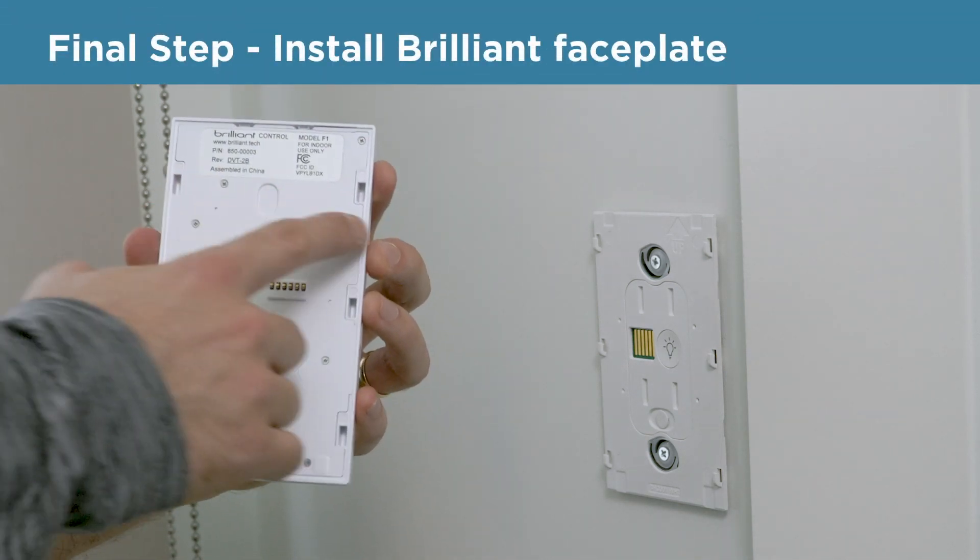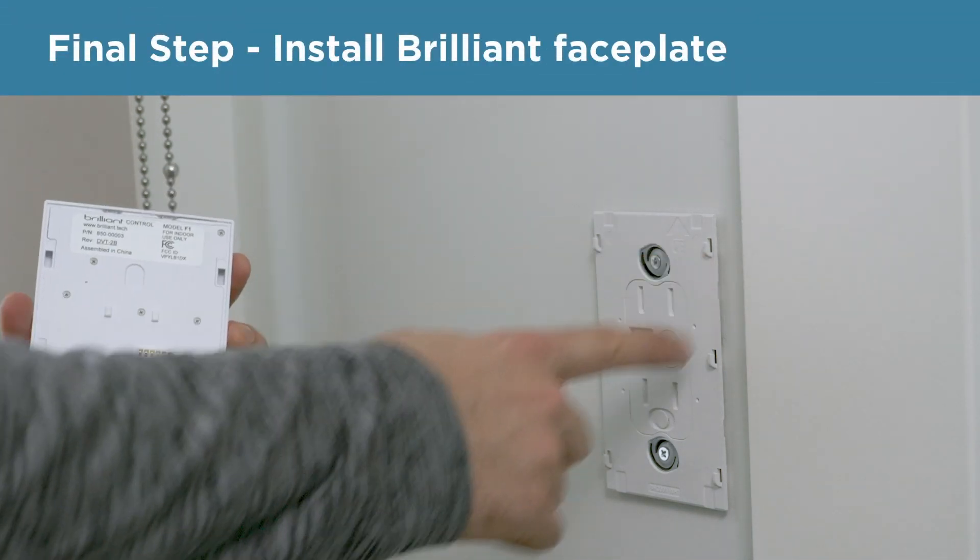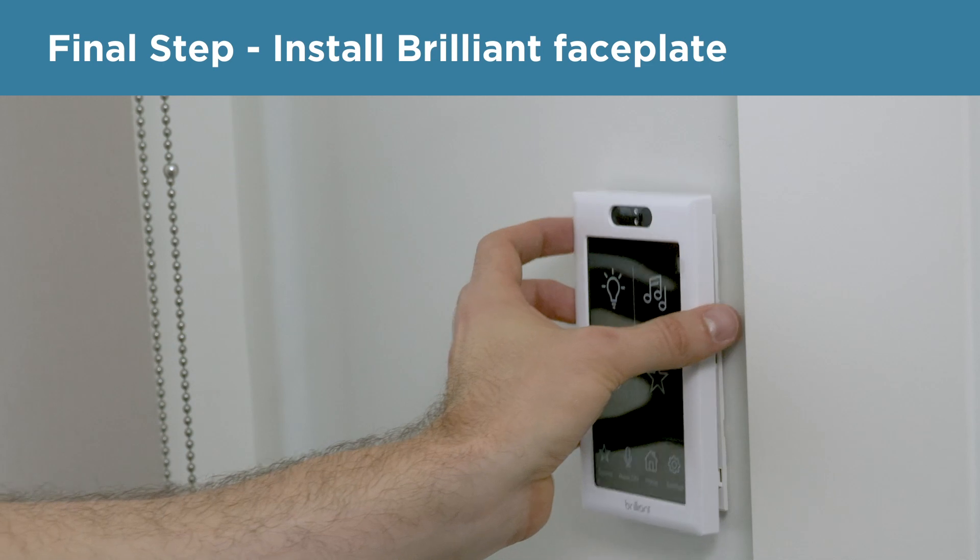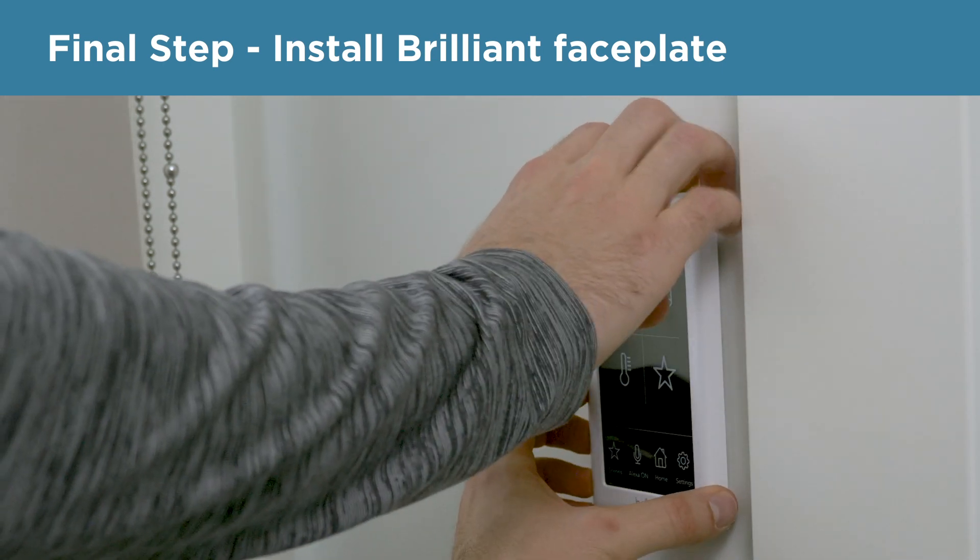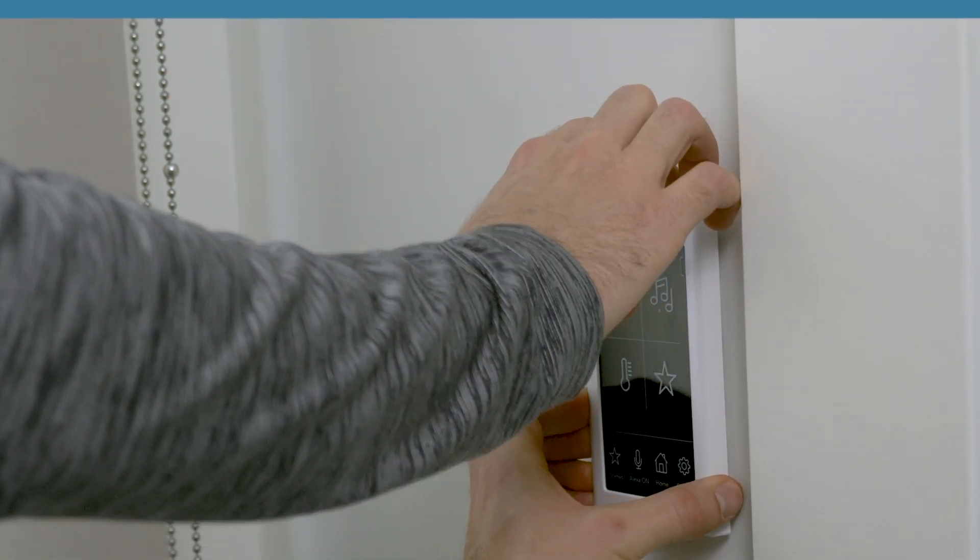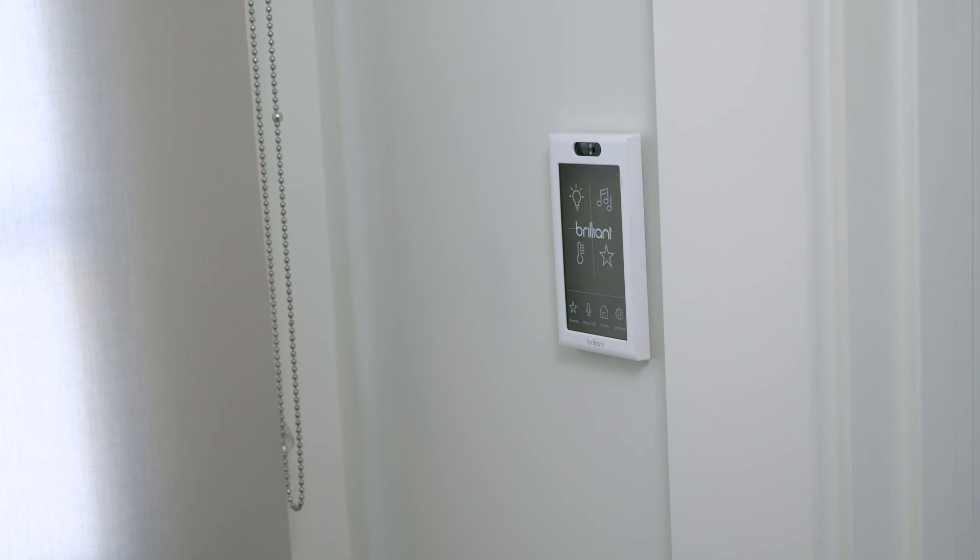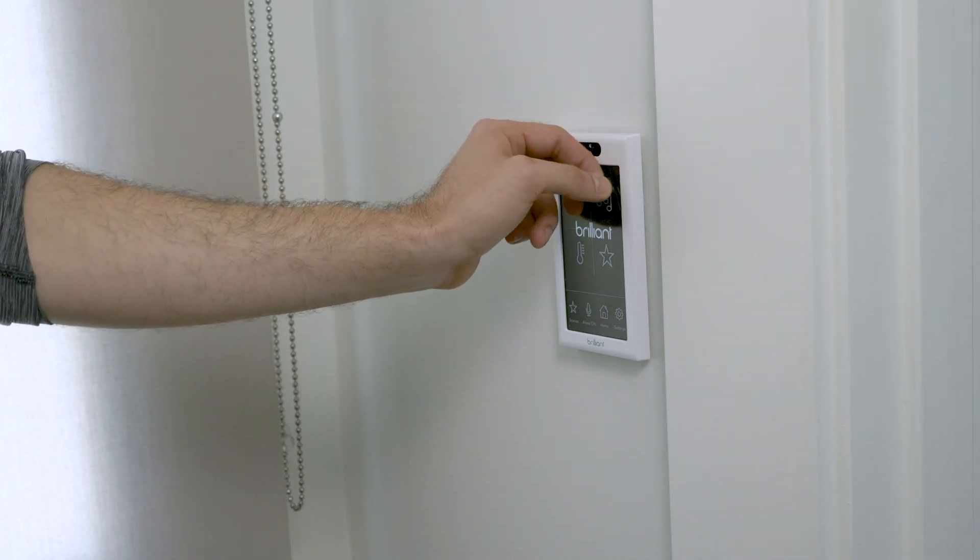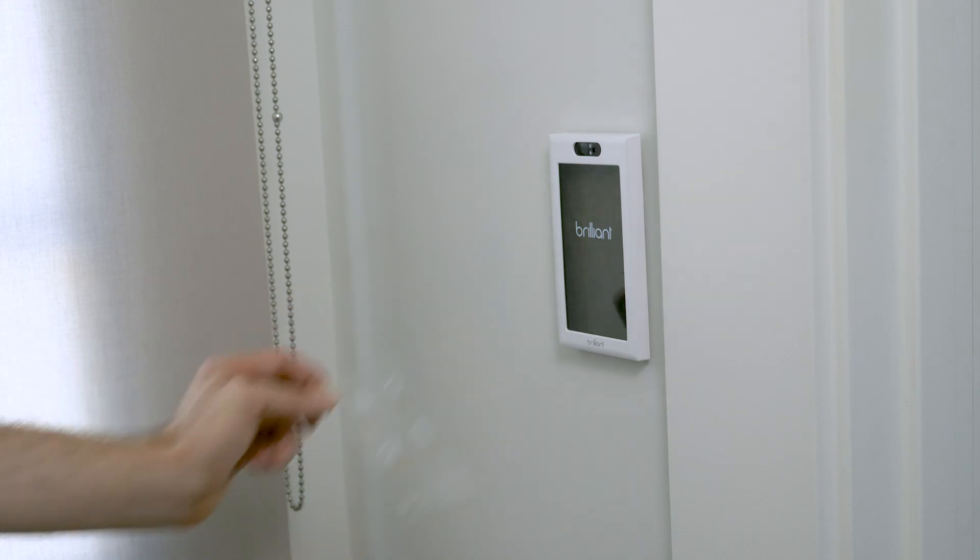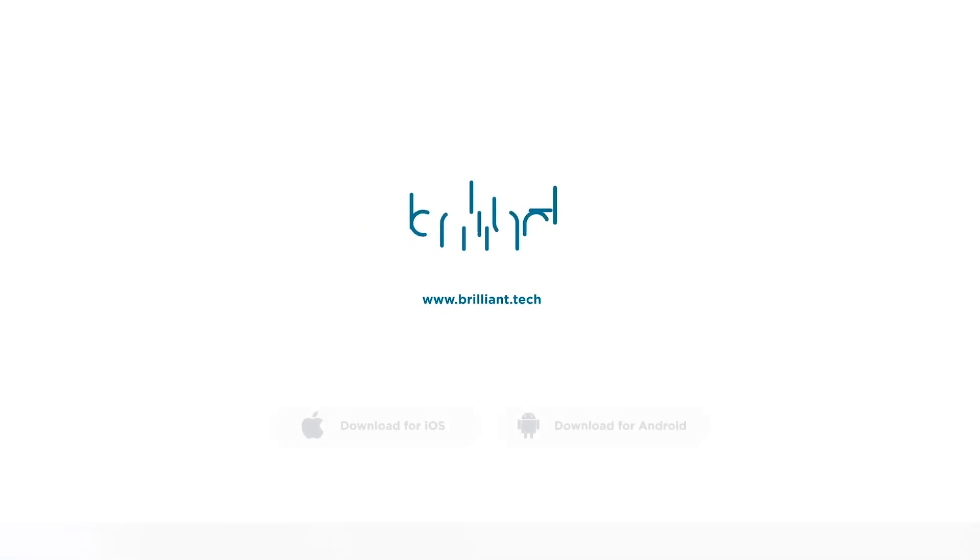The last thing I need to do is attach the faceplate to the base in order to get my Brilliant powered on. Line it up, then firmly press down on the top of the faceplate until it clicks. You'll know when the Brilliant is successfully installed when the screen is illuminated. You can now peel off the sticker and proceed to configure your Brilliant. That's all there is to it. Check out additional videos and the support page for additional installation tips.